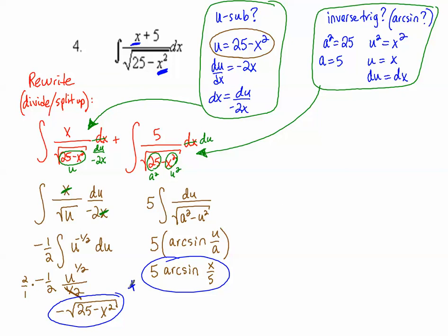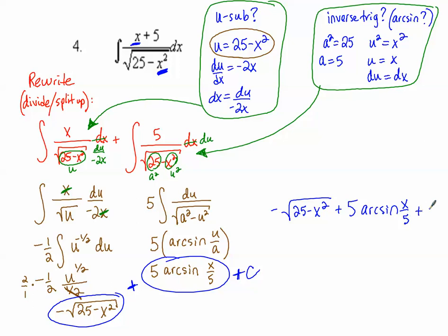Putting both parts together, the final answer is −√(25 − x²) + 5·arc sine(x/5) + C. Sometimes you have to think of multiple methods for one problem — it's pretty fun when you figure it out.